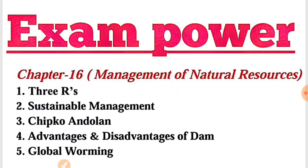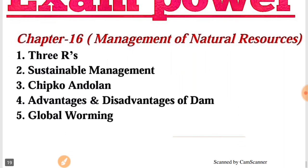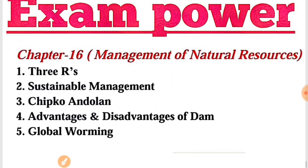Chapter Number 16 — Management of Natural Resources। इसमें से पहला topic है 3 Rs, Sustainable Management, Chipko Andolan के बारे में पूछा जा सकता है, Advantages and Disadvantages of dams, और Global Warming — इनके बारे में आप से पूछा जा सकता है।